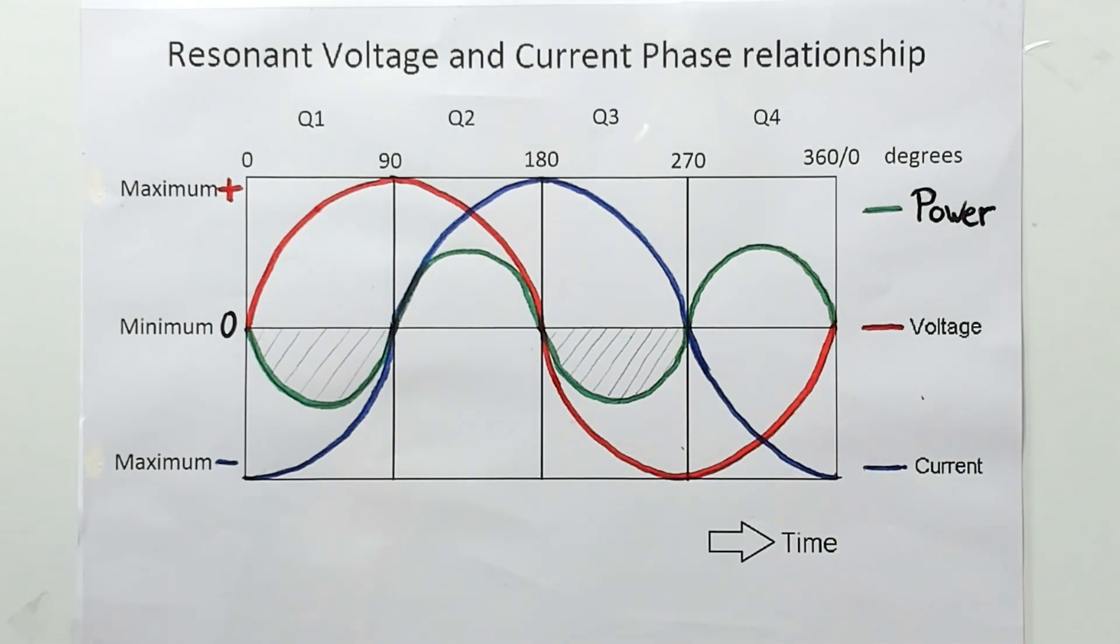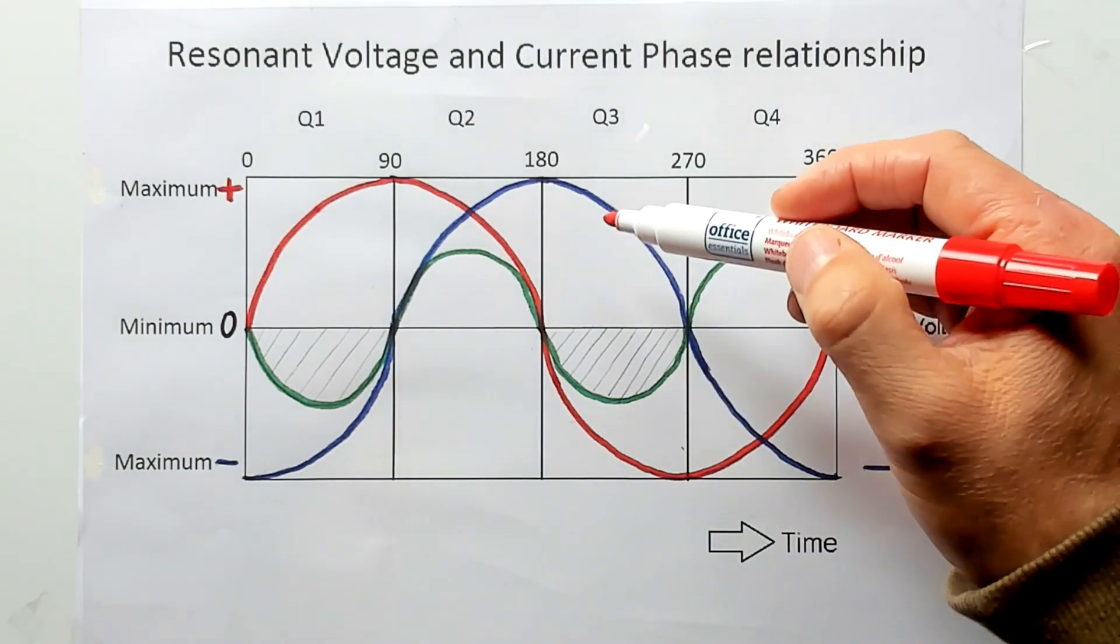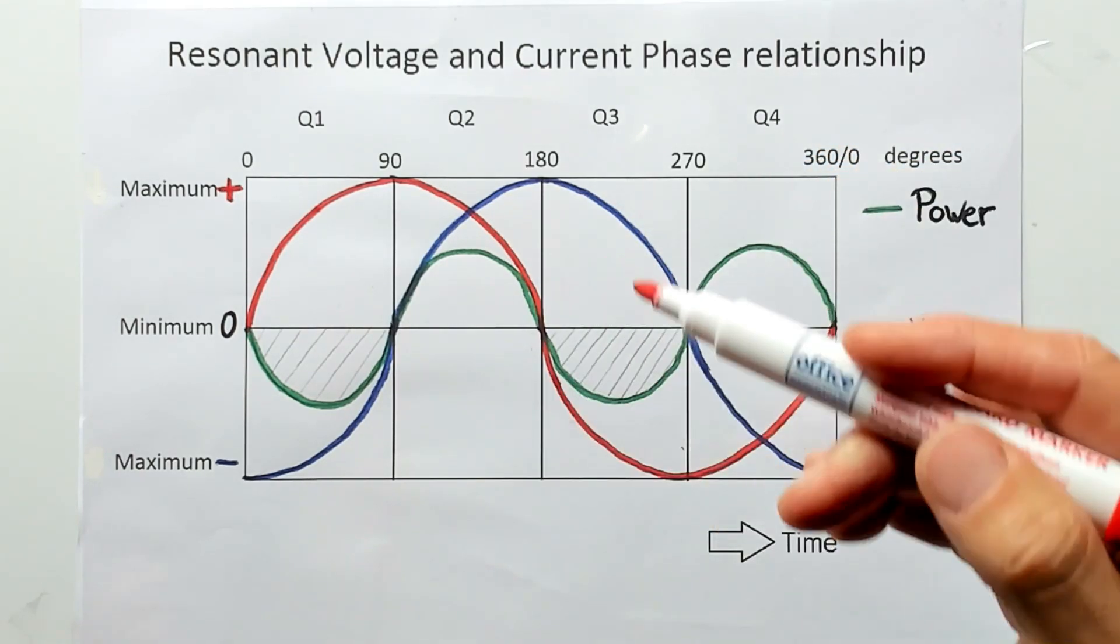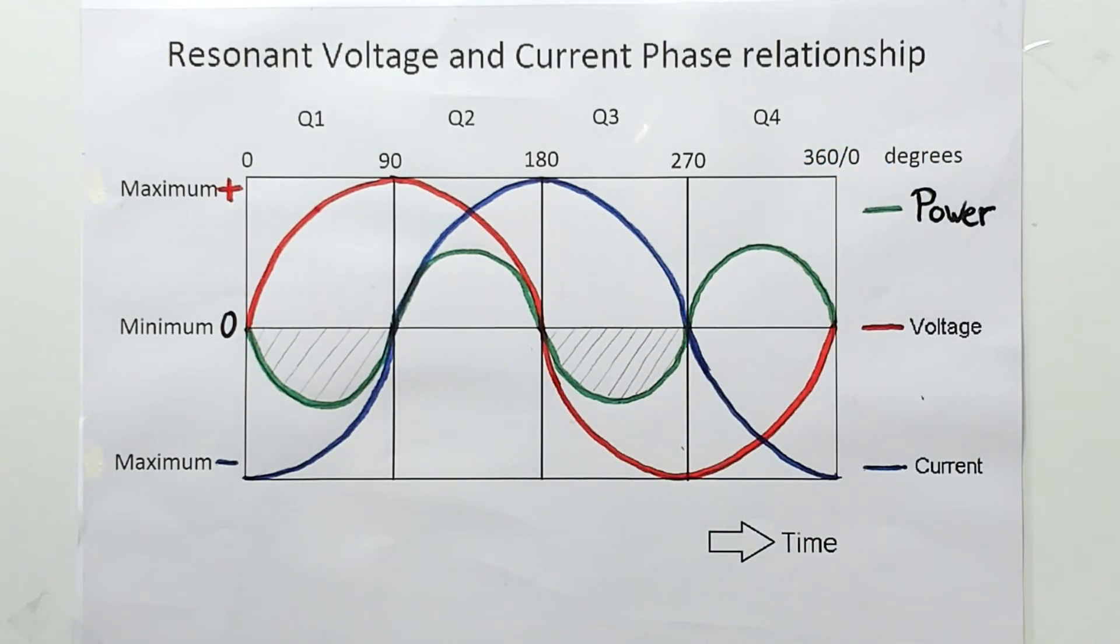And as I explained in my previous video we need a opposite polarity of voltage and current to generate power due to the conventional current agreement.